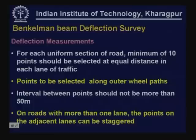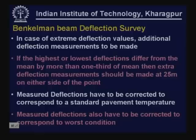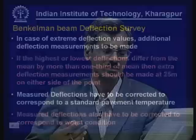For each homogeneous section, a minimum of 10 points should be selected at equal distances in each lane of traffic, along the outer wheel paths. The interval between points should not be less than 50 meters. On roads with more than one lane, points on adjacent lanes can be staggered. In case of extreme deflection values — if the highest or lowest deflection differs from the mean by more than one-third of the mean — additional measurements should be made at 25 meters on either side.